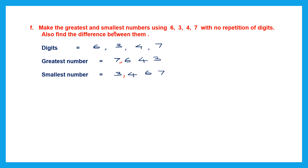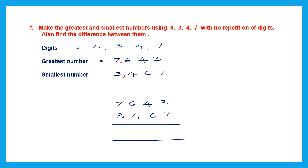Now find the difference between 7,643 and 3,467. Subtract: ones 3 minus 7 — borrow; 13 minus 7 is 6. Tens 3 minus 6 — borrow; 13 minus 6 is 7. Hundreds: 5 minus 4 is 1. Thousands: 7 minus 3 is 4. The difference is 4,176.